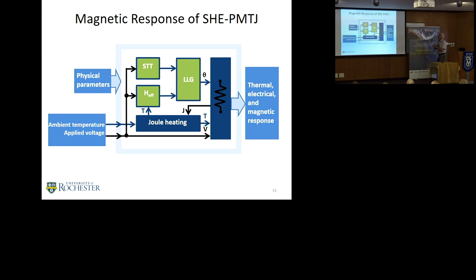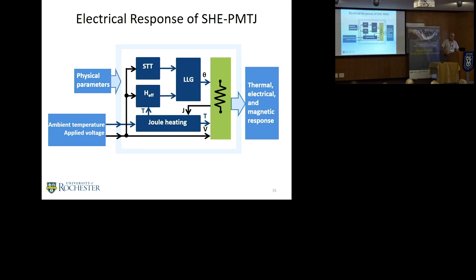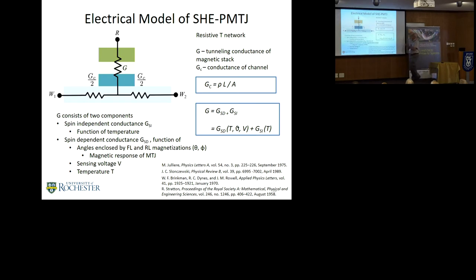We looked at the magnetic response of the device for this three-terminal structure. Again, we use the LLG equation. We recognize the independence of the variables to partition it into two second-order nonlinear differential equations. We lastly look at the electrical response of this device. In this case, we describe the conductance as being two components, both the independent and dependent conductance of the device. For this is a function of temperature, this is less so. We combine the resistivities, and we have now a model for the structure of this PMTJ structure using a three-terminal environment.